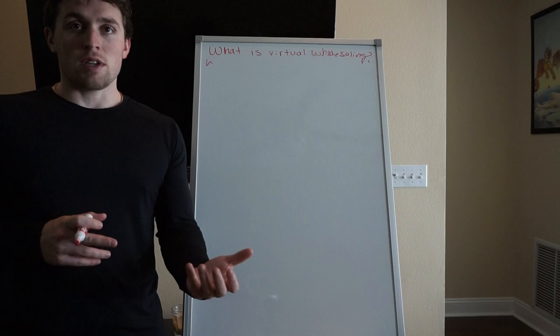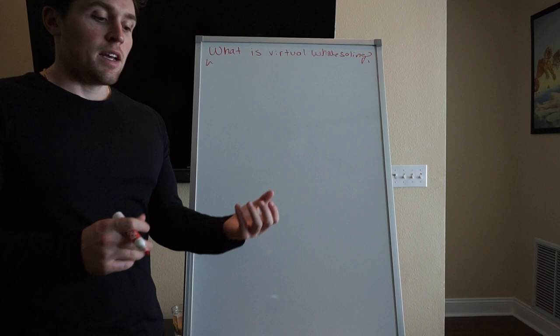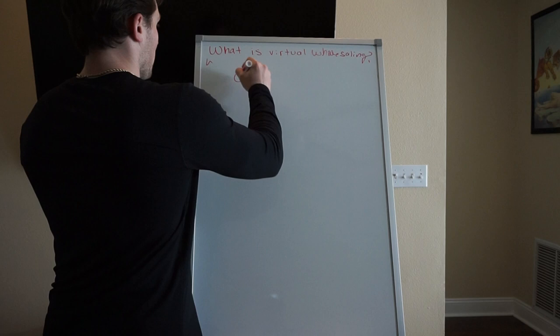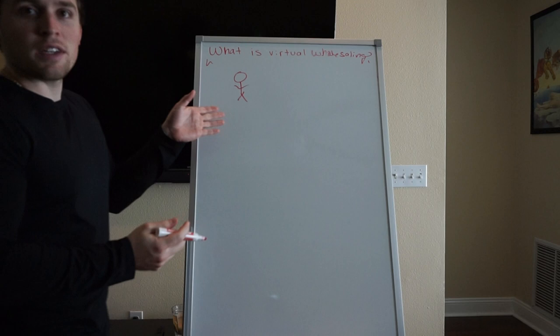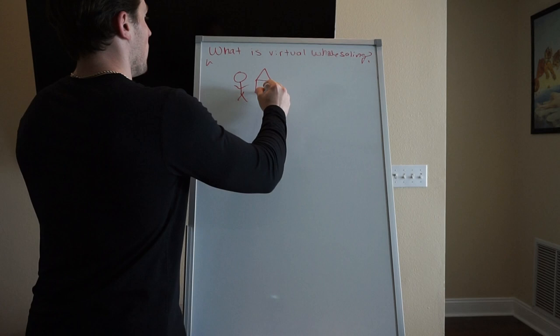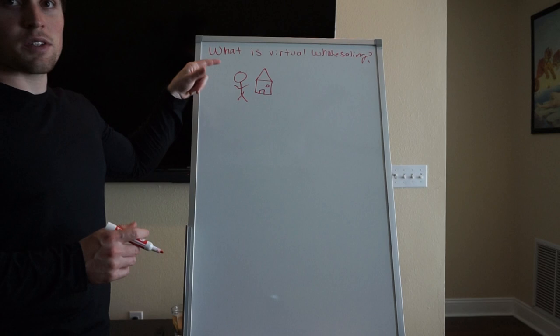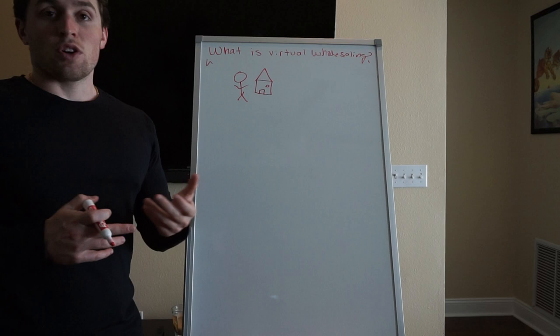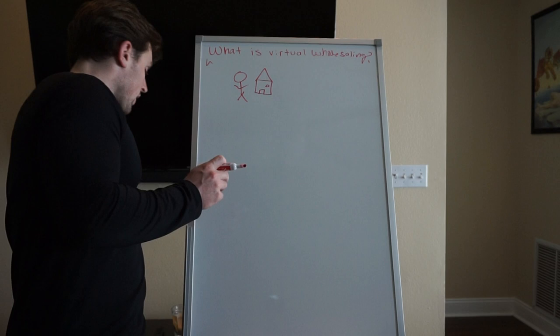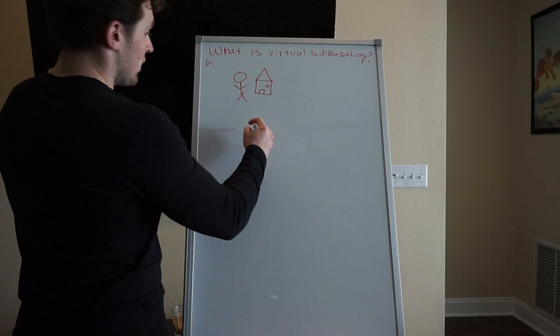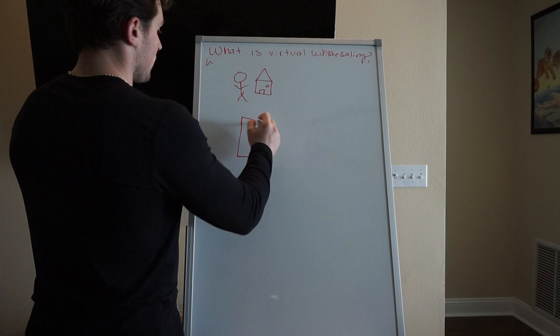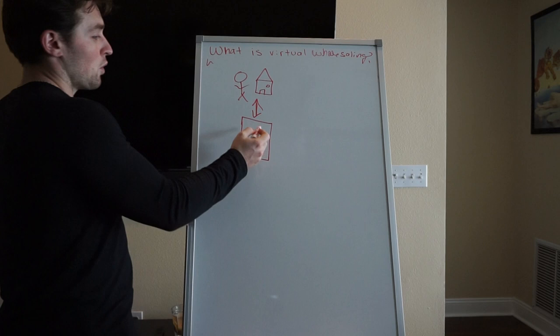Basically, you're going to work with and find somebody who owns a property. You have to know who owns the property and you're going to contact them. That person is going to sell you the property. So you have a person — I'm going to try to draw this here — you have a person and then you have their house. You find this person, and in order to wholesale you need to find somebody who wants to sell their house. Once you find out they want to sell, you're going to tell them we can buy it from you, and we're going to do that via a purchase agreement or contract.